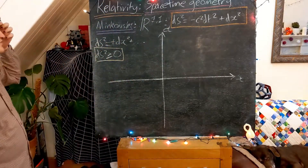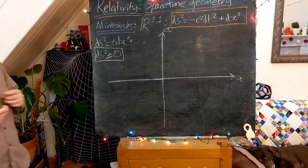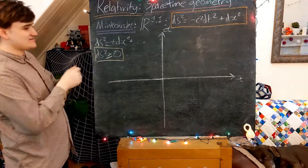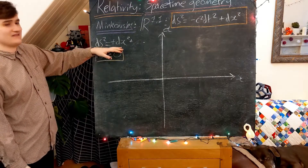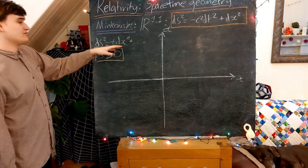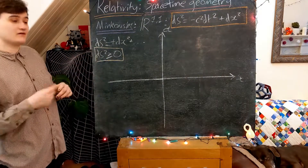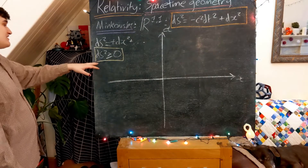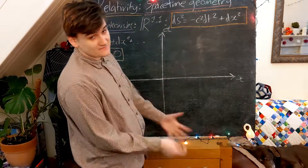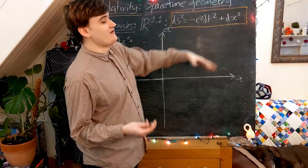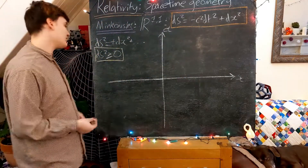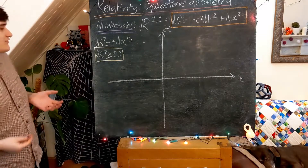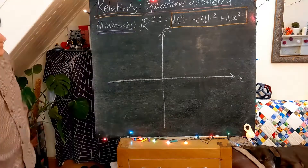That does seem fairly strange. We always like to think of distances between points as being positive, or zero only when we're talking about the same point — essentially in the Euclidean sense where there's no separation. That's the only case where ds squared can be zero in Euclidean space. But now in Minkowski space, we can have ds squared equal to zero and also ds squared less than zero. This is very non-intuitive behaviour, and we're going to spend quite some time fully understanding what this means.